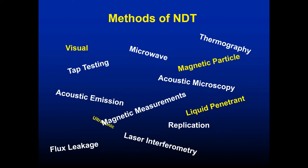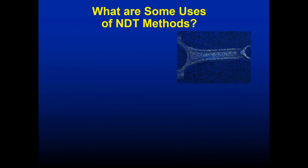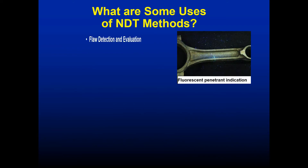Other methods include magnetic measurements ranging from magnetic particles through eddy current, ultrasonic inspection, and flux leakage. All of these different methods are mostly variations on the six most common methods we'll talk about shortly. So what are some of the uses of these NDT methods?